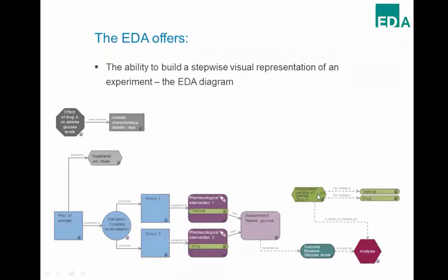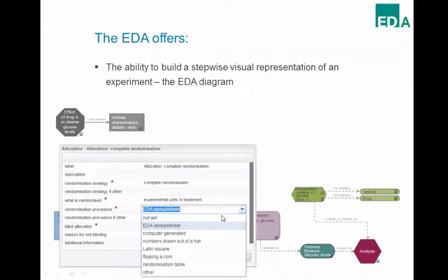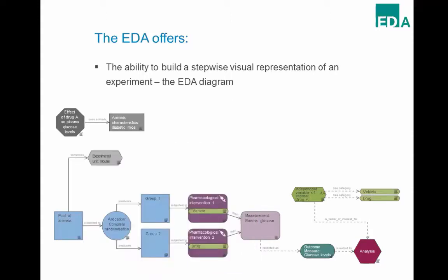Each colourful element is called a node, and each node contains more information. In the allocation node properties, for example, you can indicate your randomisation strategy — such as complete randomisation — and your randomisation procedure, whether by flipping a coin or using a spreadsheet generated from the EDA. The diagrams are far more explicit than text descriptions, since inside each node you find details about that specific step in the experiment.